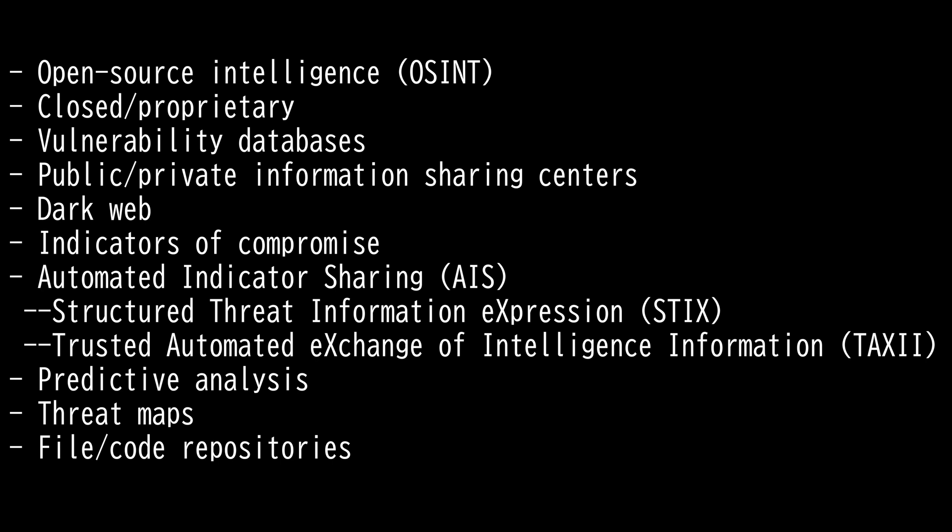It's basically collecting information from multiple sources available to everyone. You'll be very surprised what kind of data you can get using open source intelligence. Googling away is technically open source intelligence. Next, we have closed proprietary.